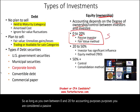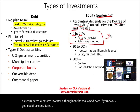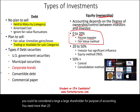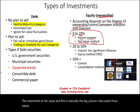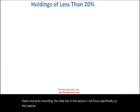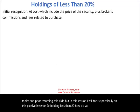Although in the real world, even if you own 5 percent, you could be considered a large shareholder. But for the purpose of accounting, you need more than 20 percent. How do we report these investments? Once we have 0 to 20 percent, we report the investment at fair value. This is basically the big picture. In this session, I will focus specifically on this passive investor — holding less than 20 percent. How do we recognize the initial purchase?